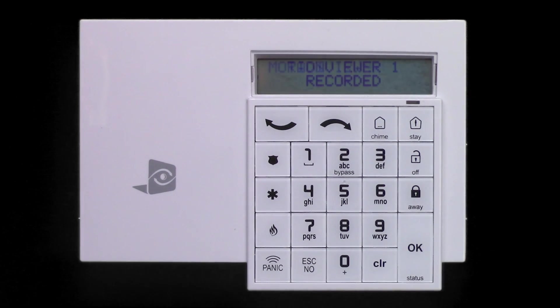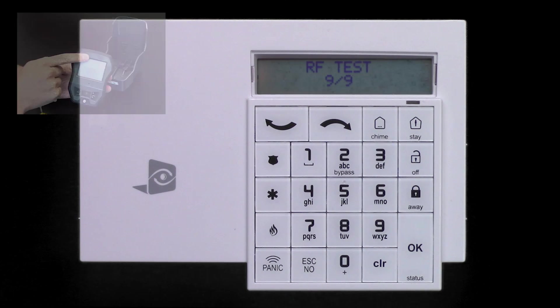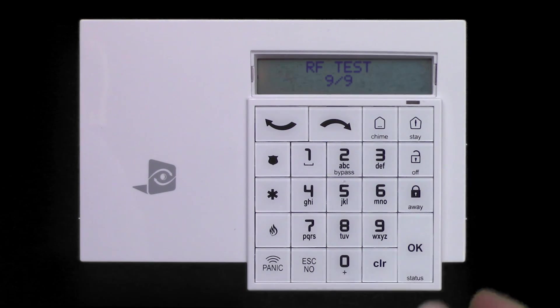Press the OK button to move to the radio range test. Allow the reading to climb to 9-9. Press OK to stop the test. Press Escape No to skip the test.